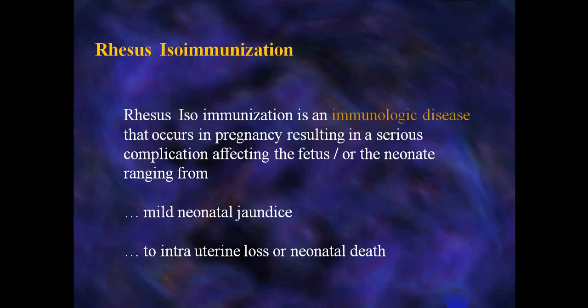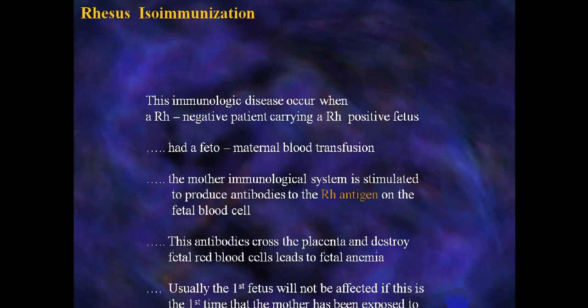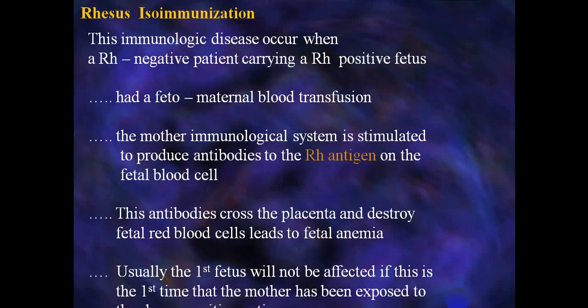RH isoimmunization is an immunological disease that occurs during pregnancy, resulting in serious complications affecting the fetus or neonate, ranging from mild neonatal jaundice to intrauterine loss or neonatal death depending on the affected fetus. This immunological disease occurs when an RH-negative patient is carrying an RH-positive fetus.